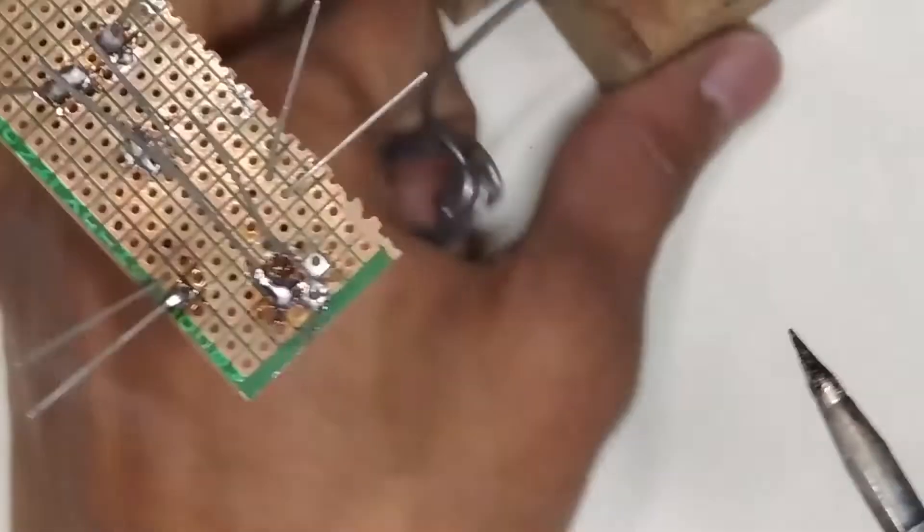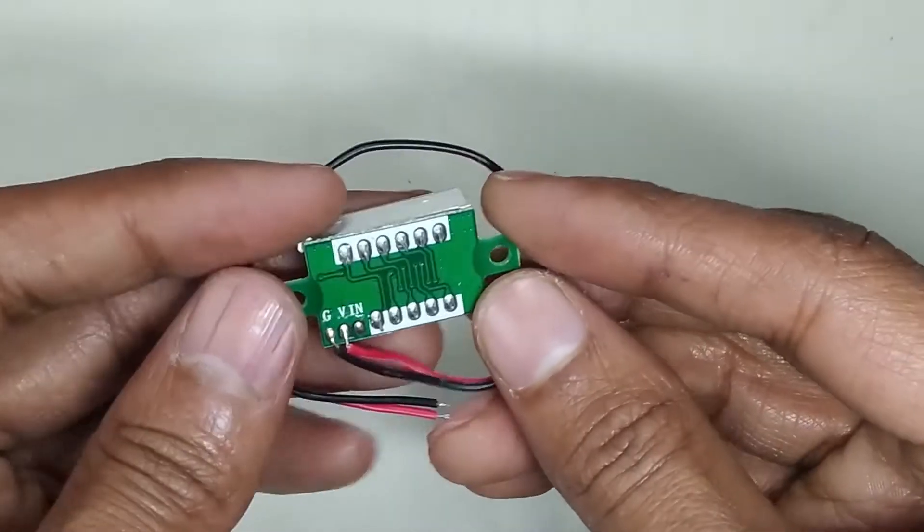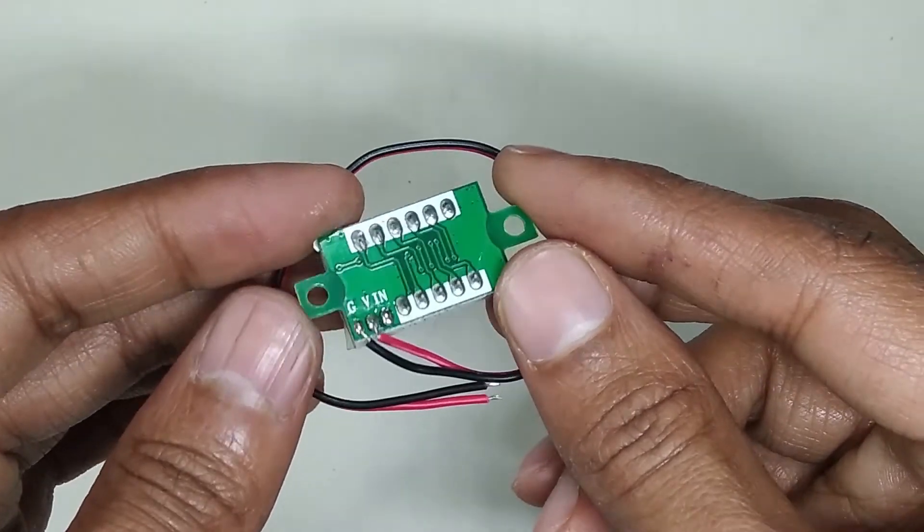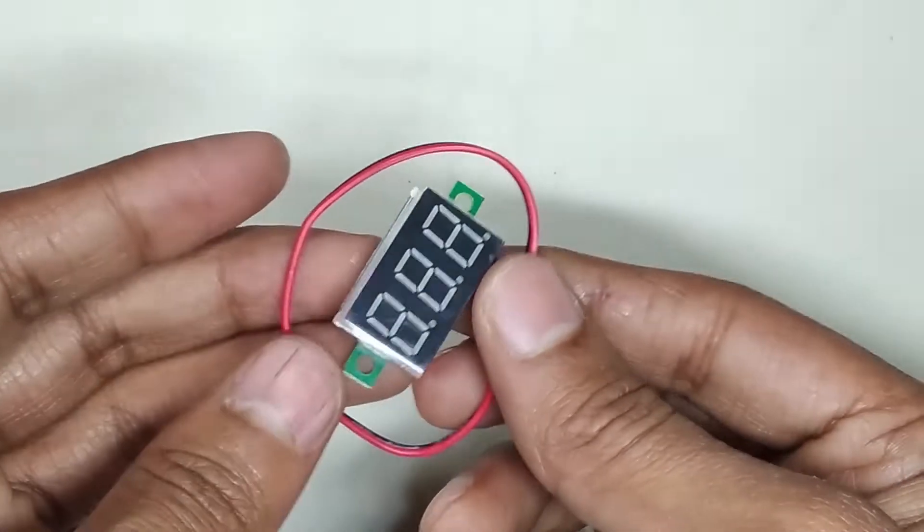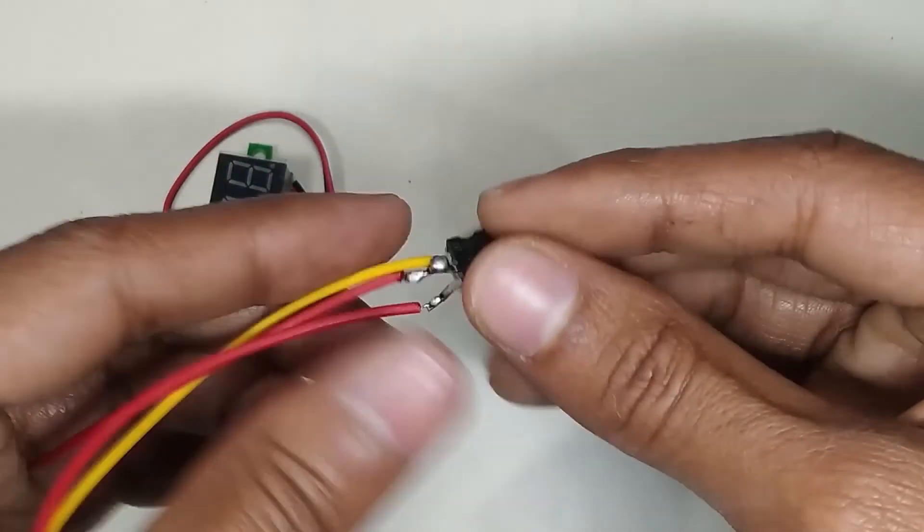Now coming to the display. This display is going to show the output voltage of the power supply. For operating this display we need another excitation of 5 volt. That's why I am going to use this type of voltage regulator IC.